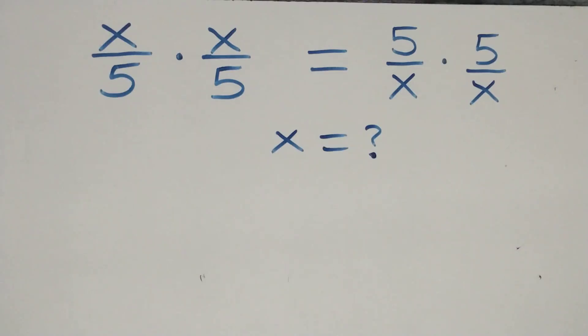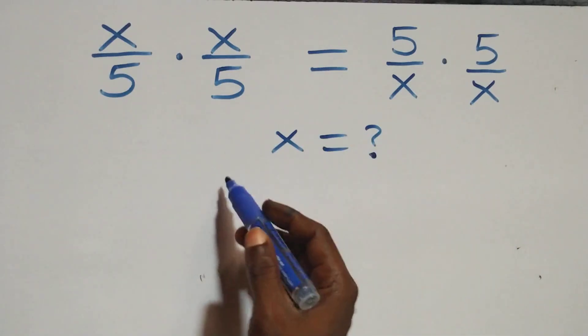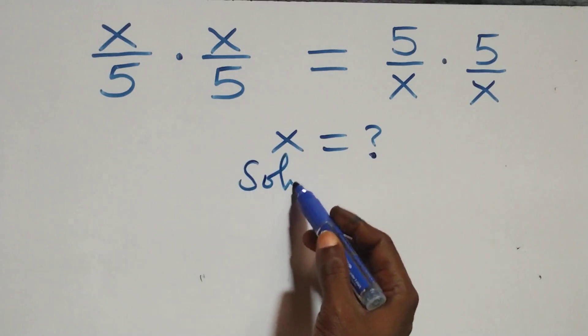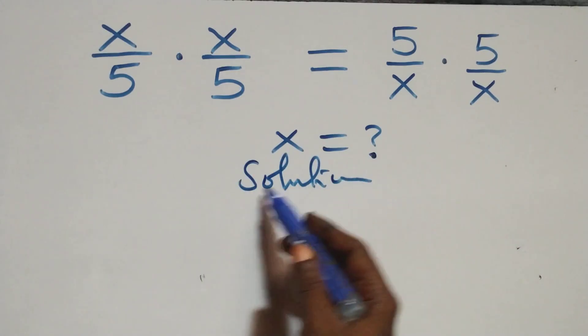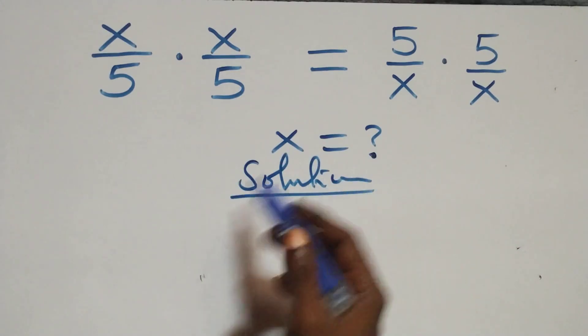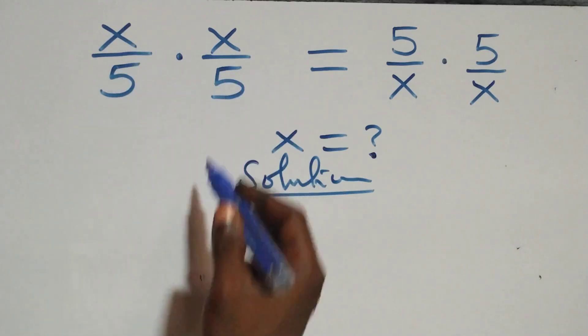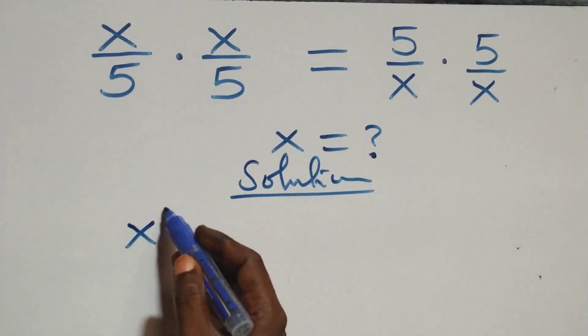Hello, you are welcome. How to solve this nice algebraic equation — solution from here. From what we have here, we can multiply directly: x times x, that can be written as x squared.